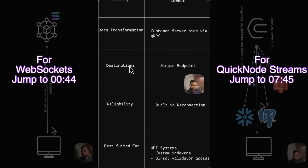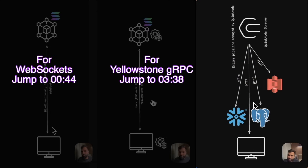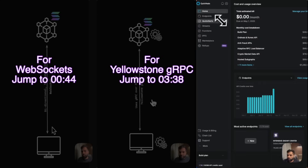Now let's talk about QuickNode Streams, which helps you build your entire data pipeline on the QuickNode platform — you do not need to set up anything yourself. As shown in the diagram, QuickNode Streams can stream to multiple destinations using the HTTP protocol. Everything from data handling, data transformation, sending the data, and retries happens on the QuickNode platform itself.